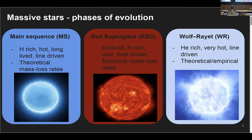For both main sequence and Wolf-Rayet stars, you can approach this theoretically — the mass loss rates are understood to be line driven. But for red supergiants, although people are starting to make some progress on theoretical understanding, it's still pretty hard, and most mass loss prescriptions that people use for red supergiants are empirical, as we've heard about this week.